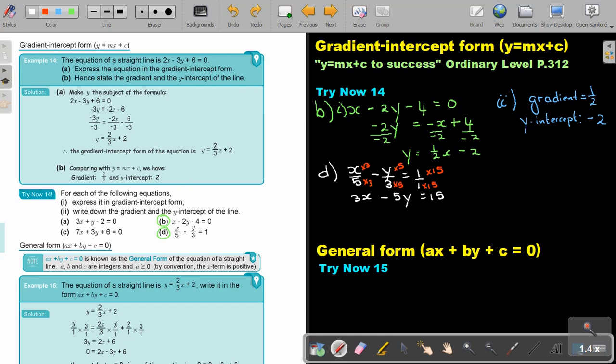And now, I'm going to make y the subject of the formula. So, it's going to be negative 5y is equal to negative 3x plus 15. Then, I'm just going to divide negative 5, divide negative 5, divide negative 5. And then, I'm going to get y is equal to 3 over 5x minus 3. Okay. And if this is my answer, that will be now my answer of number D.